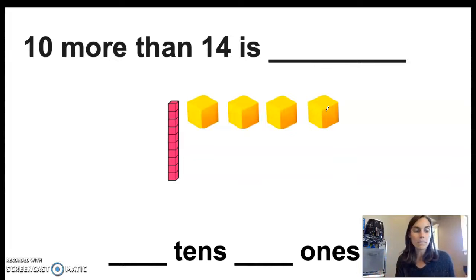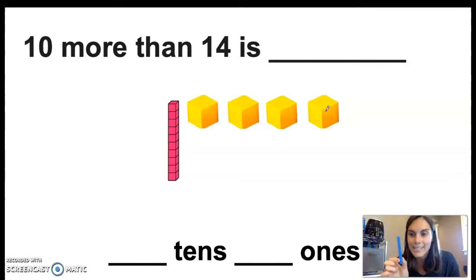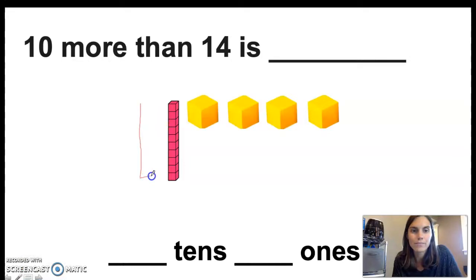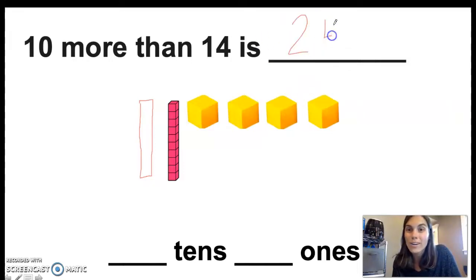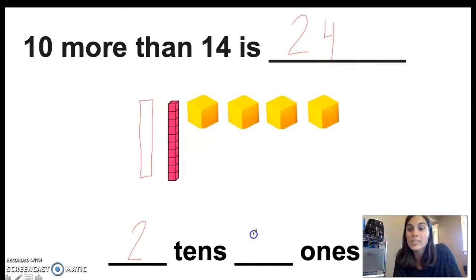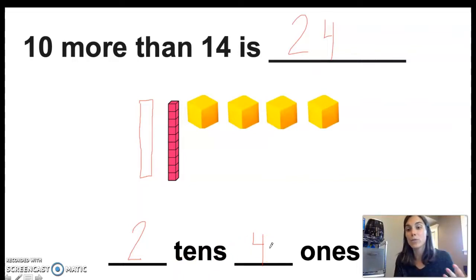Reset your board. Make sure you have 14 — 1 ten and 4 ones. Now we're doing 10 more. This time we're not going to touch our 1s; we're just going to add a 10 stick and put it next to our other 10. I'm going to go ahead and draw another 10. All right, I've added a 10. I didn't touch my 1s at all. Let's count: 10, 20, 21, 22, 23, 24. Now I know I have 24. Since I added another 10, now I have 2 tens, and I still have 4 ones. 2 tens and 4 ones makes the number 24. 10 more than 14 is 24.